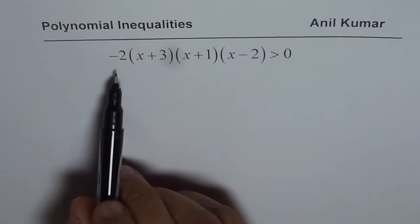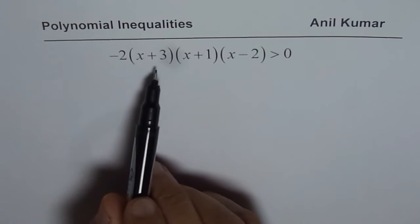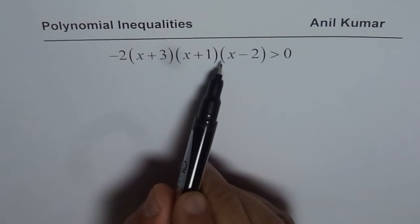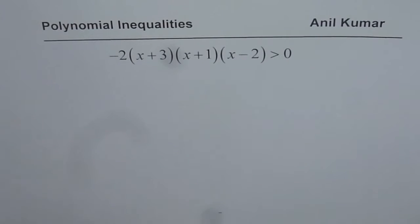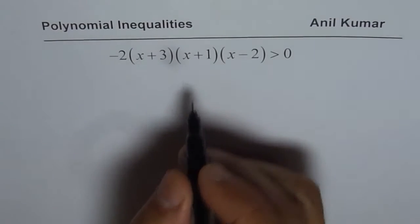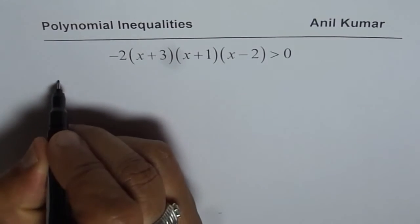We will start with the equation minus 2 times x plus 3 times x plus 1 times x minus 2 greater than 0. So the first thing is to find all the zeros.